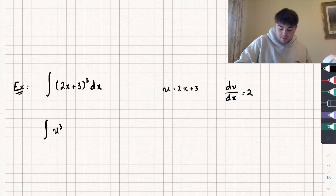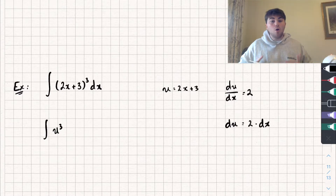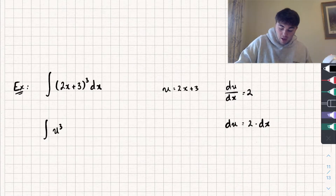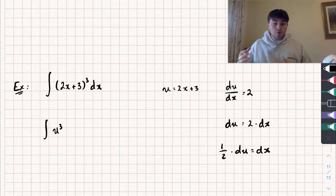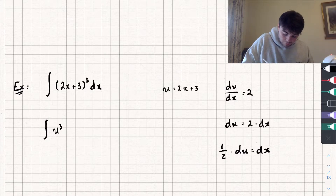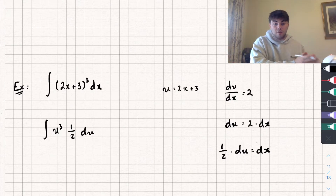Multiplying both sides by dx gives du = 2 dx, and then dividing both sides by 2 gives (1/2) du = dx. Now that I know what dx equals, I can substitute that into my integral and we get the integral of u cubed multiplied by one-half with respect to u. Since one-half is just a constant, I can pull it out to the front of the integral.